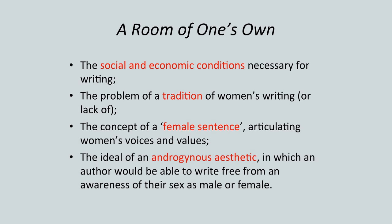A Room of One's Own was published in 1929, and it makes a number of key arguments. One thing she focuses on is the social and economic conditions necessary for women's writing. Another is the problem of a tradition of women's writing — or a lack of tradition — for women writing in the 19th and early 20th centuries to be drawing upon.